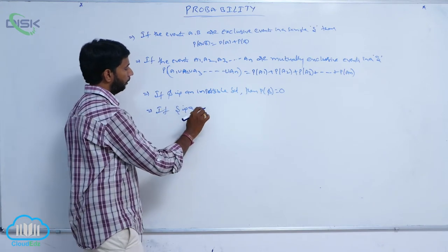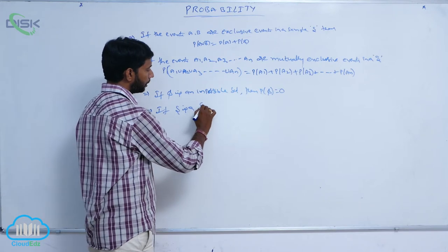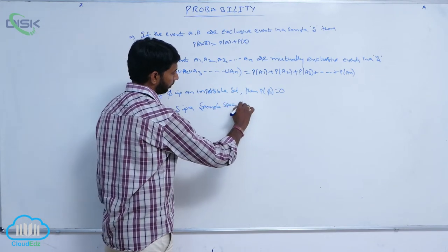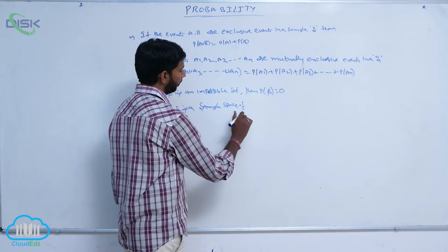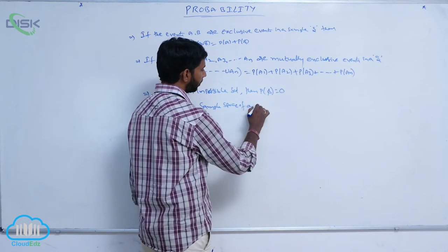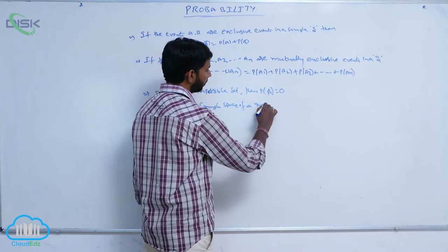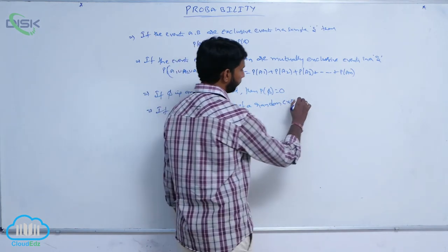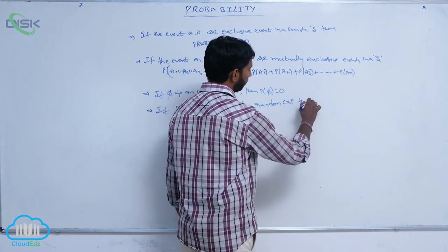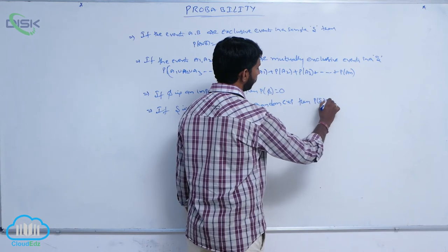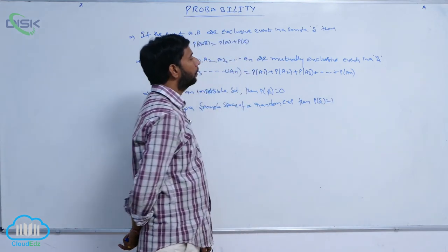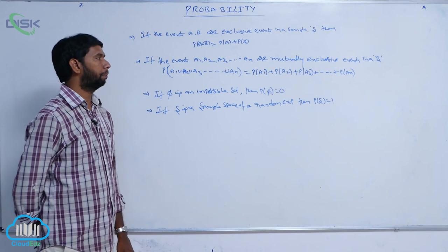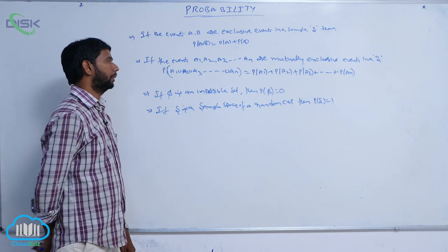If S is a sample space of a random experiment, then P of S is equal to 1. The sum of events in a random experiment is equal to 1.